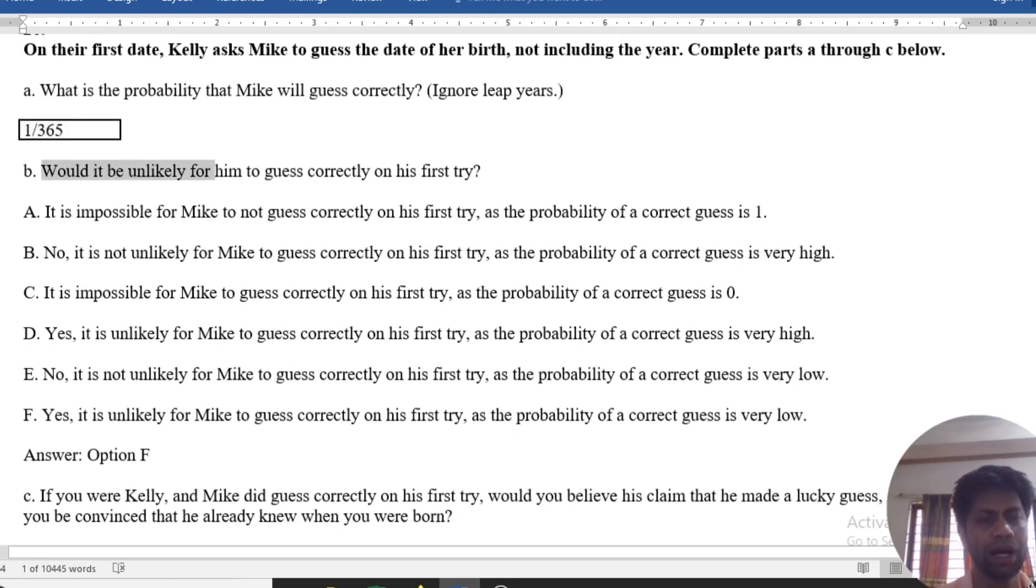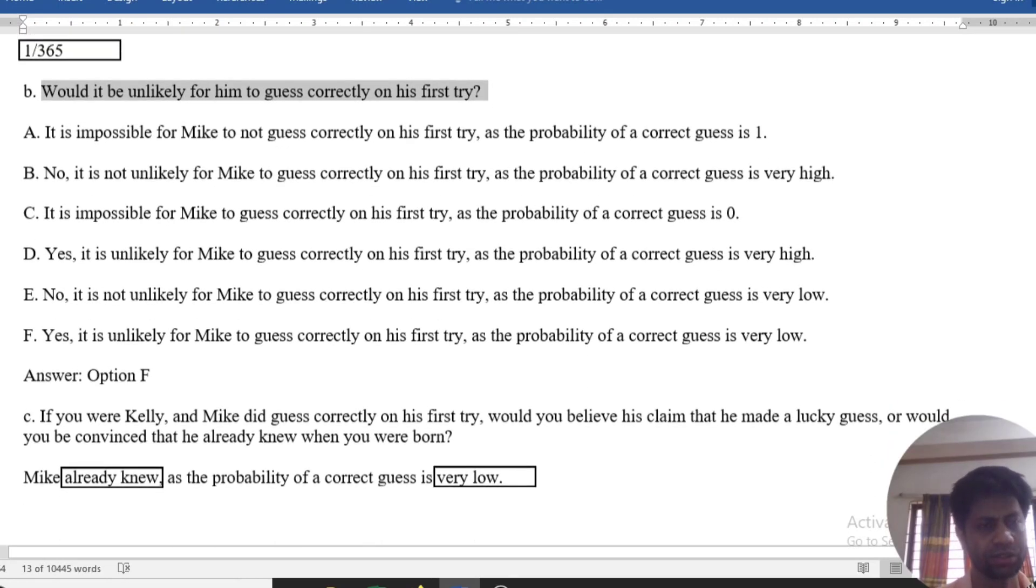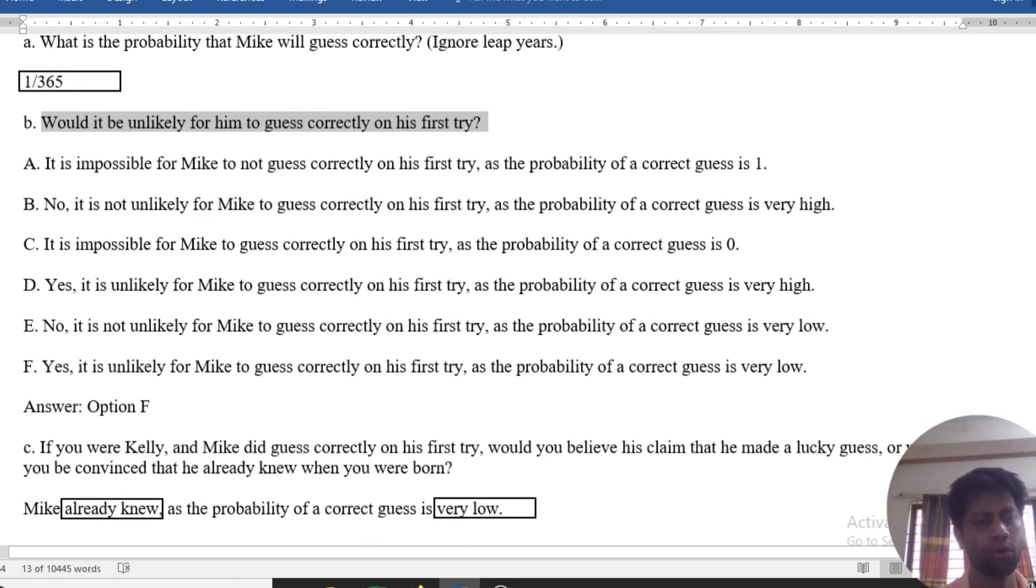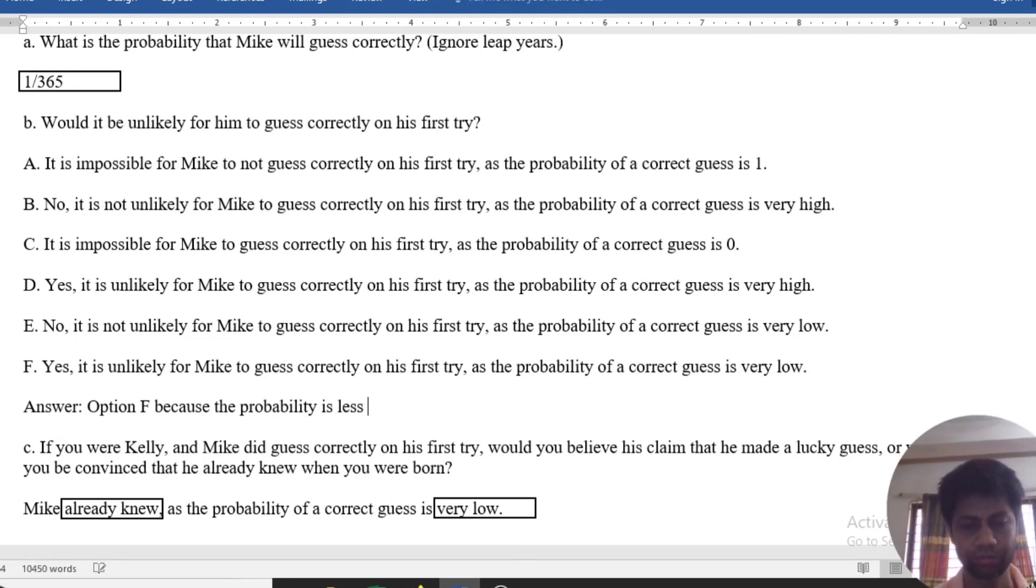Would it be unlikely for him to guess correctly on first try? Yes, because it is less than 0.05. Because the probability is less than 0.05, so our option is F.